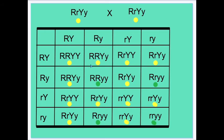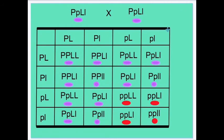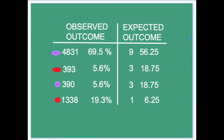In Mendel's cross he got the classic 9-3-3-1 ratio, and if the sweet peas followed a similar pattern, then this would be the ratio expected: 9-3-3-1. The actual result looked something like this, with the expected outcome shown in one column and the observed outcomes shown alongside.